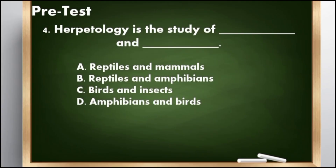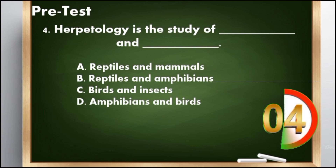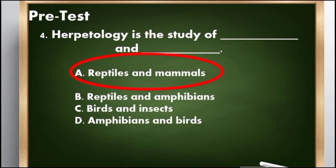Number 4: Herpetology is the study of ___. A. Reptiles and mammals, B. Reptiles and amphibians, C. Birds and insects, D. Amphibians and birds. The correct answer is letter A, reptiles and mammals.